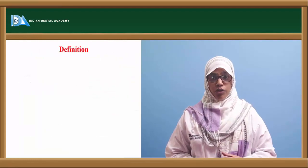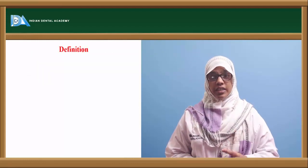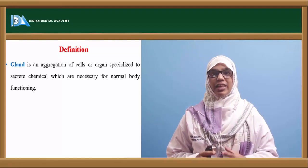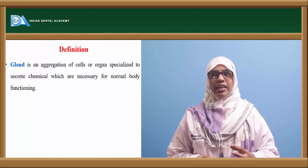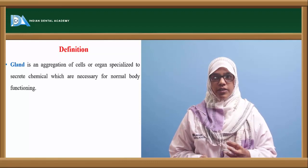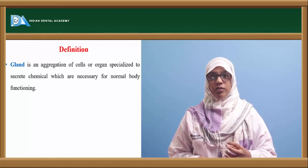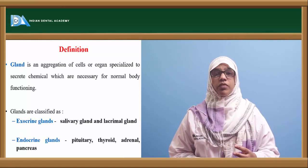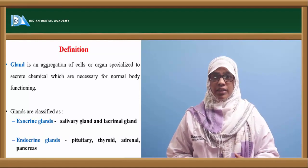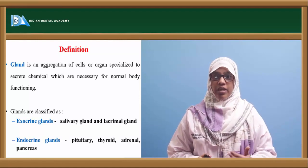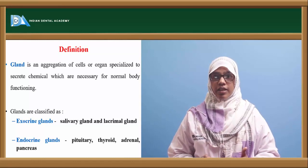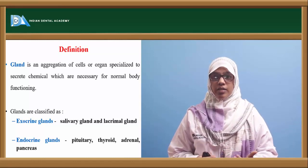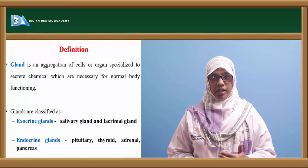Before we go on to the diseases of salivary glands, let's take a look at the definition of what is a gland. A gland is an aggregate of cells or organs specialized to secrete chemicals which are necessary for body function. They can be divided into exocrine glands and endocrine glands. Exocrine glands are the salivary glands and lacrimal glands, whereas endocrine glands are the pituitary, thyroid, or adrenal glands.